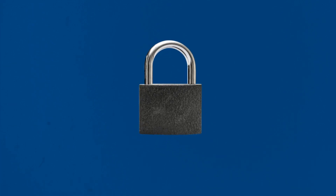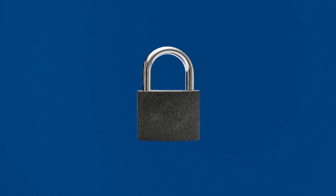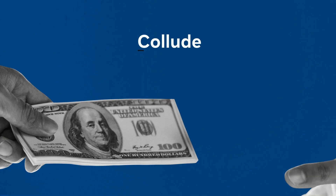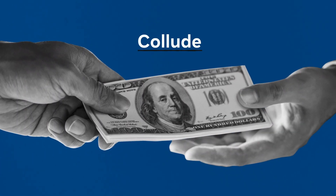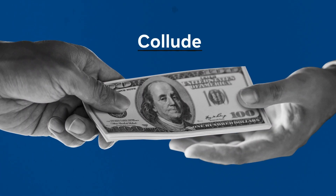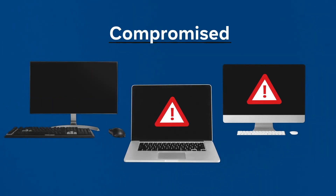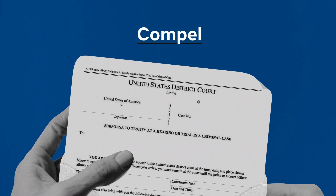For user privacy to get compromised, either two of the organizations would need to collude with one another, or a hacker would need to compromise two of the three organizations, or a government would need to compel two of the three organizations to hand over all their data.